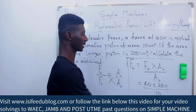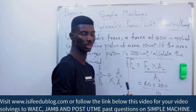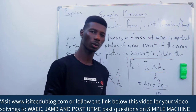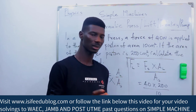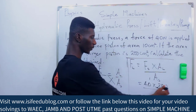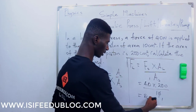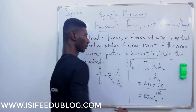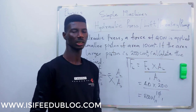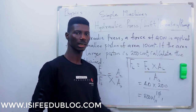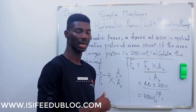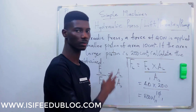Cancelling the units and computing: 40 times 200 divided by 10 gives us 800 newtons. So the force obtained on the larger piston is 800 newtons. Everything here is exam-focused. If you have any questions, drop them in the comment section. For more questions, go to the exercise and past question section where you will find numerous solved questions on this topic.